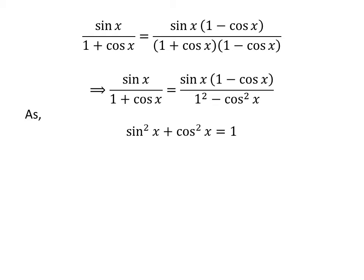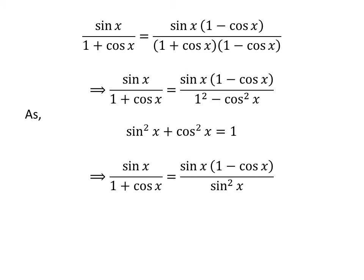We know the famous trigonometric identity: square of sine of x plus square of cosine of x is equal to 1. This identity implies that 1 minus square of cosine of x is equal to square of sine of x.